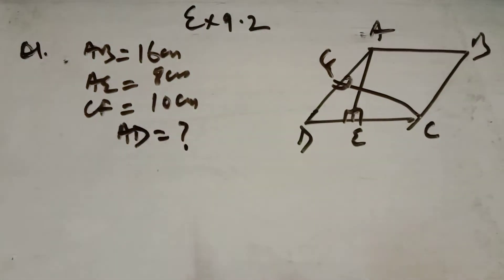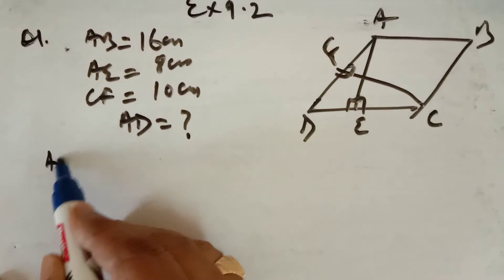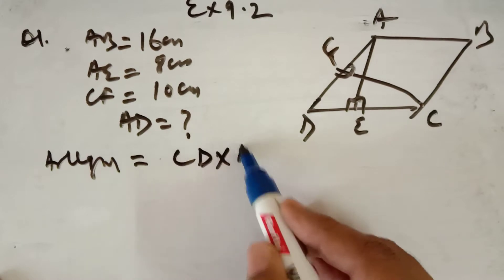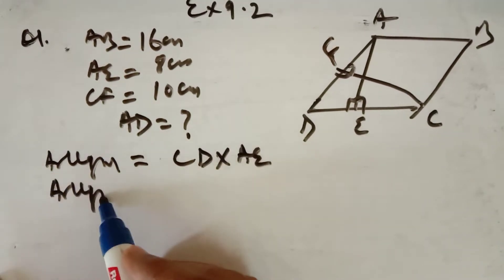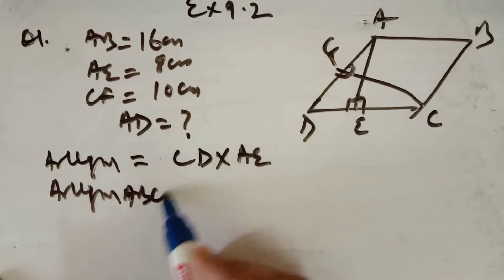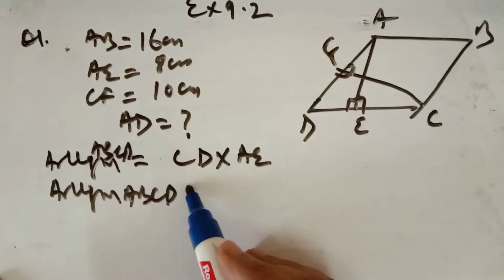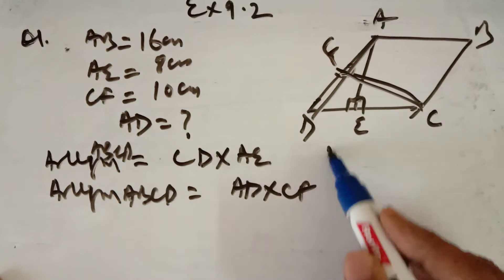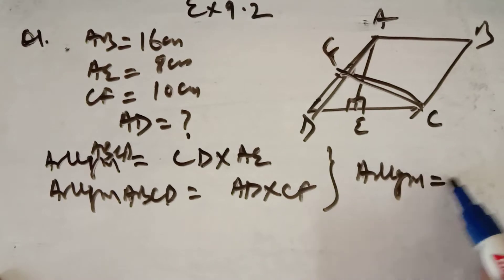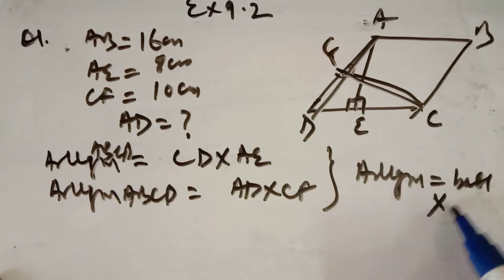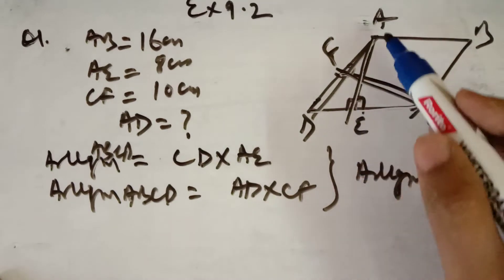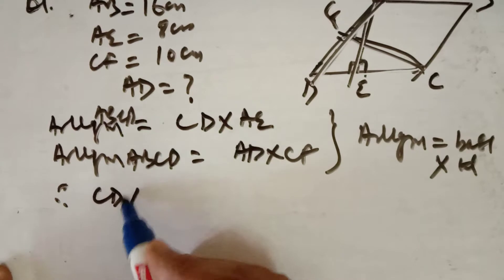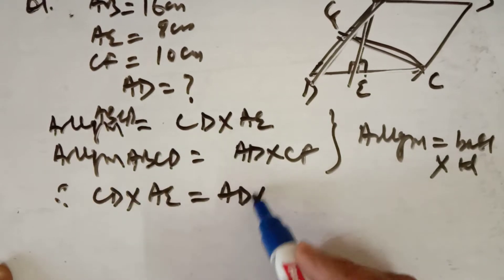Now we know that the area of the parallelogram is equal to base into height, that is CD into AE. The area of parallelogram ABCD is also equal to base into height, that is AD into CF. The area of a parallelogram is base into height — when this base is CD, the height will be AE; when base is AD, the height will be CF. Since it is the same parallelogram, these two expressions are equal to each other: CD × AE = AD × CF.